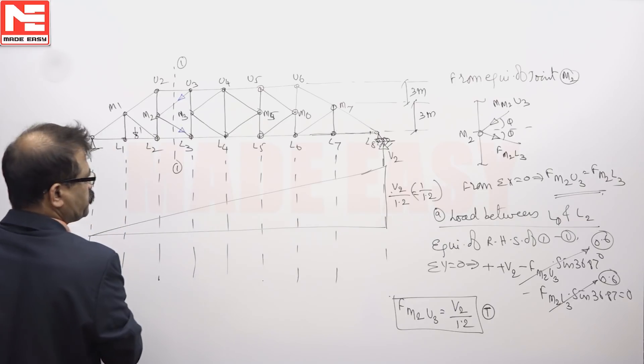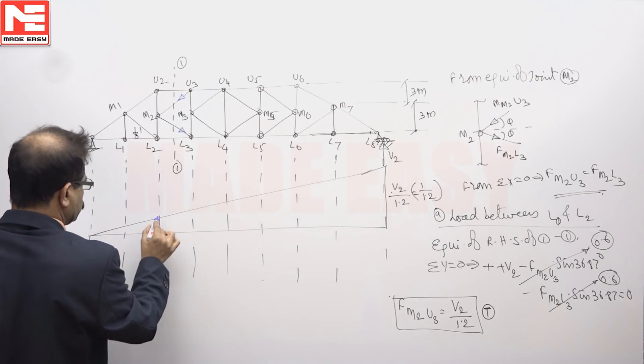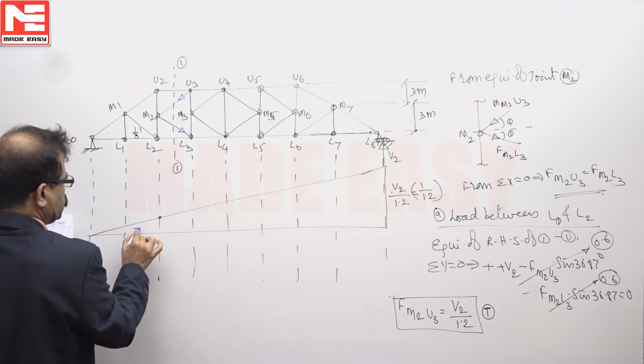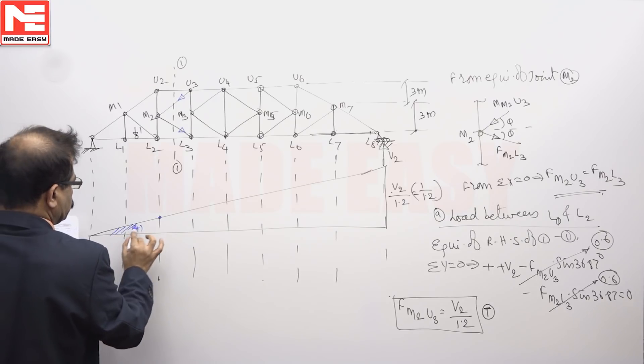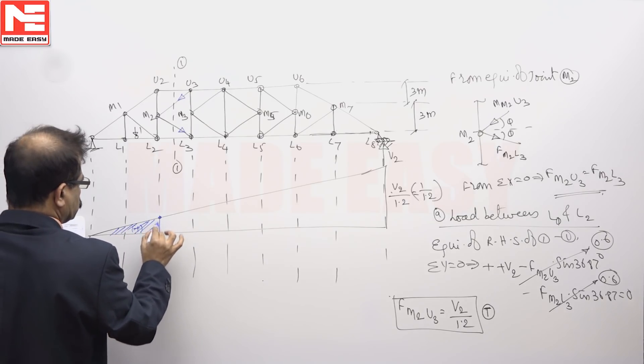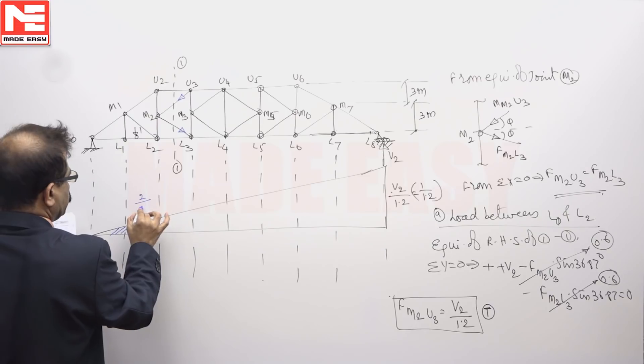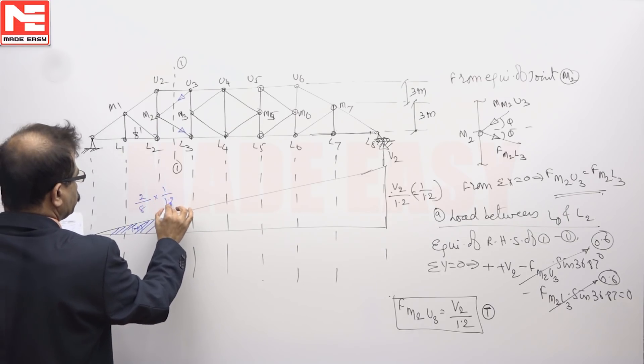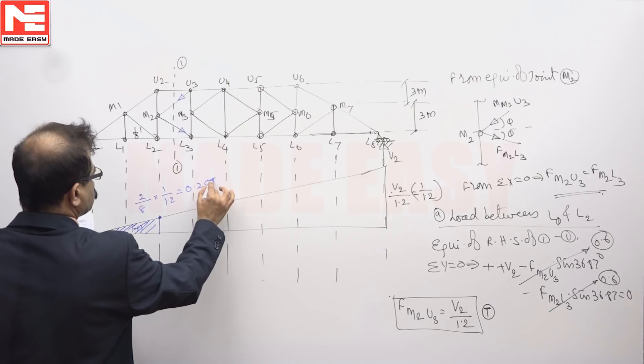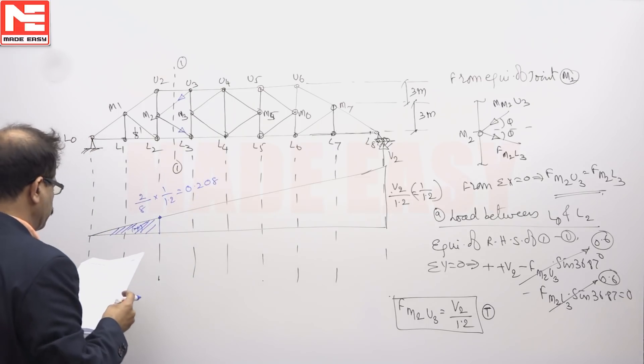And for 8 panels it is so much. For 2 panels, how much? Plus should be there here. 2 by 8 panels into 1 by 1.2, you will get 0.08.